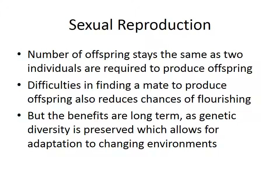In sexual reproduction, the number of offspring stays the same because two individuals are required to produce offspring — you have to produce two to make one copy of yourself, so this won't increase the population as much, but it will increase diversity. There are also difficulties in finding a mate, which reduces the chance of colonizing an entire area. These are some problems of sexual reproduction, but the benefits are long-term because genetic diversity is preserved, allowing adaptation to changing environments.